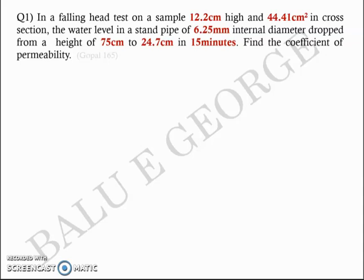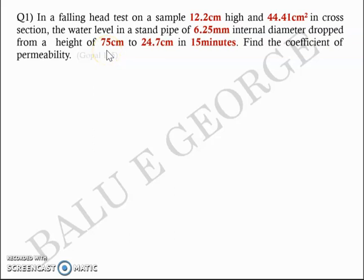Here is a numerical problem based on the falling head test discussed in the previous video. In a falling head test, on a sample 12.2 cm high and 44.41 cm² in cross section, the water level in the standpipe of 6.25 mm internal diameter dropped from a height of 75 cm to 24.7 cm in 15 seconds. Find the coefficient of permeability.